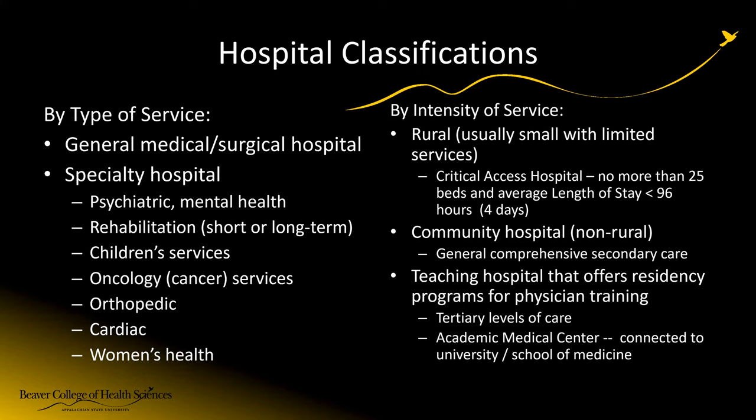Community hospitals or non-rural community hospitals provide general comprehensive services — general acute care, such as surgery with a three-day stay or a heart attack admission. And then we have teaching hospitals, often referred to as academic medical centers, normally affiliated with a school of medicine. They have residents coming in and tend to provide very specific, acute, severe-type care.